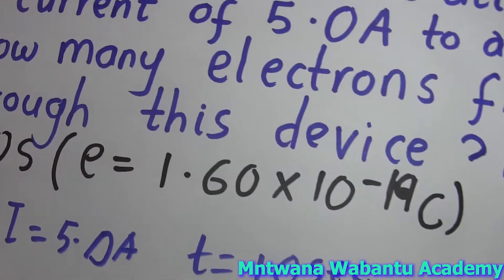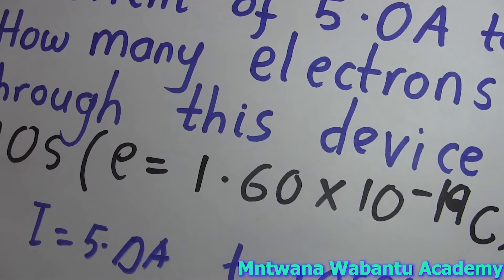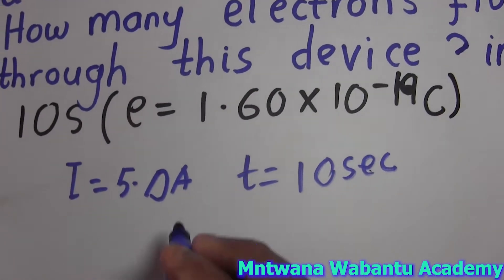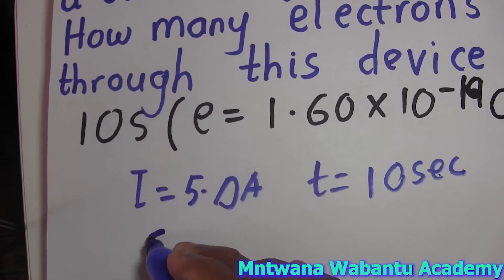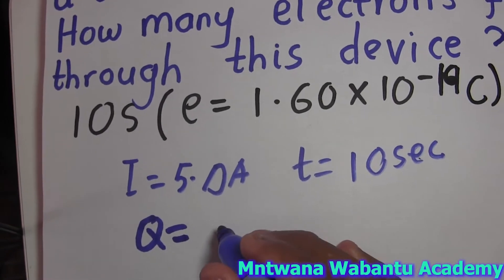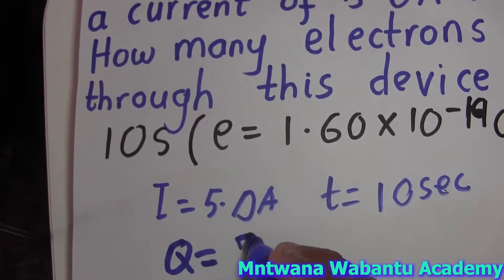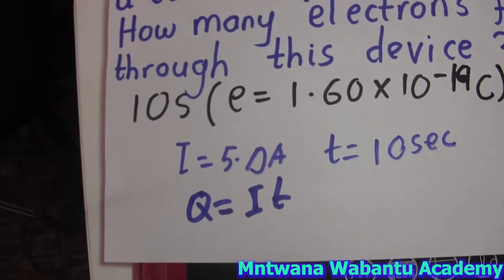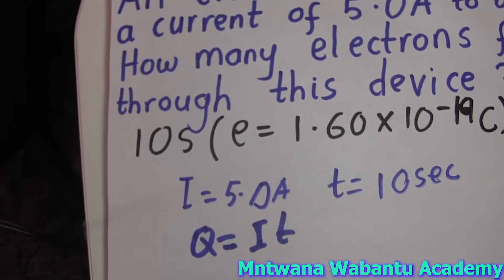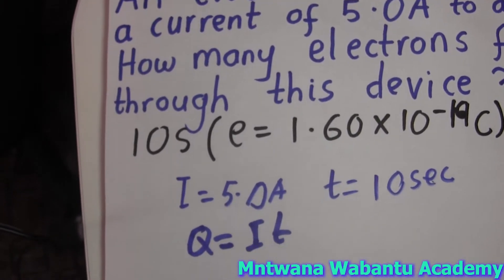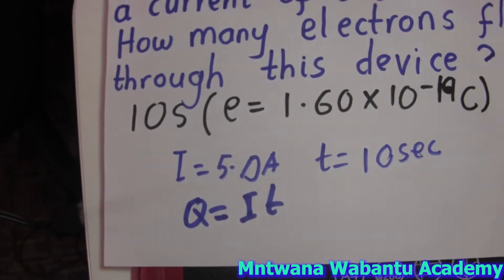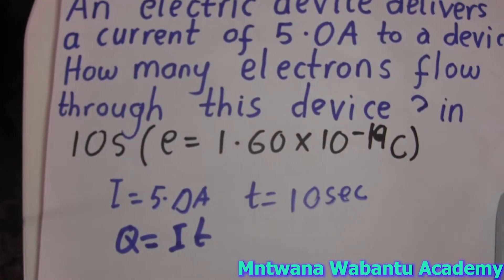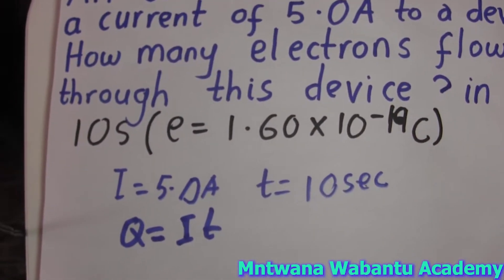First and foremost, I'm always going to write a formula. We know that quantity Q equals I times t — that is current times time. Do you have a current? Yes. Do you have a time? Yes. So I can plug it in. And apart from that, we know...